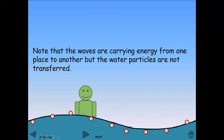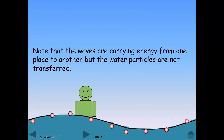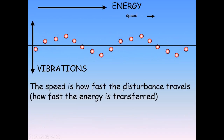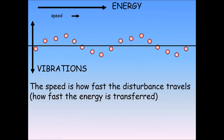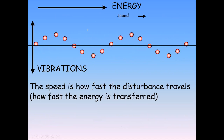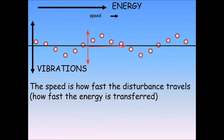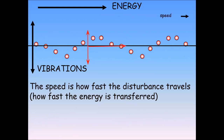Note that the wave carries energy from one place to another, but the water particles themselves are not transferred — each particle just moves up and down and transfers energy to the next particle. As shown in another image, the particles are moving up and down and energy transfers towards the right. The direction of particle movement and the direction of the wave are perpendicular, or 90 degrees, to each other — so we call that a transverse wave.